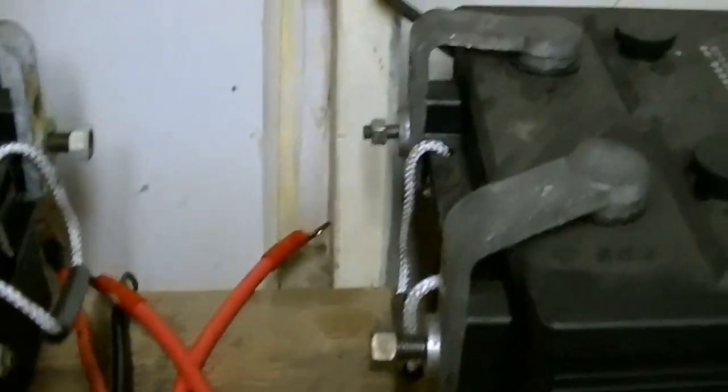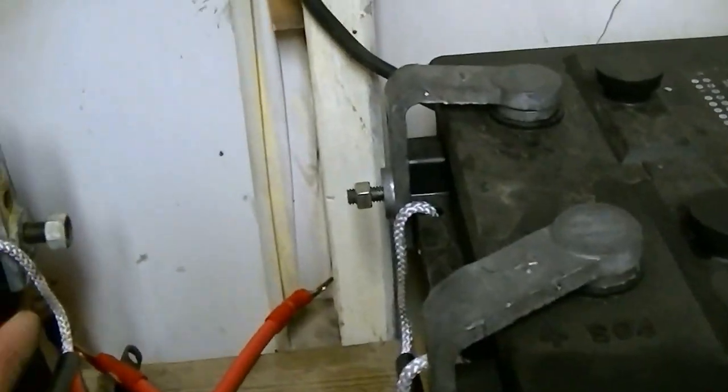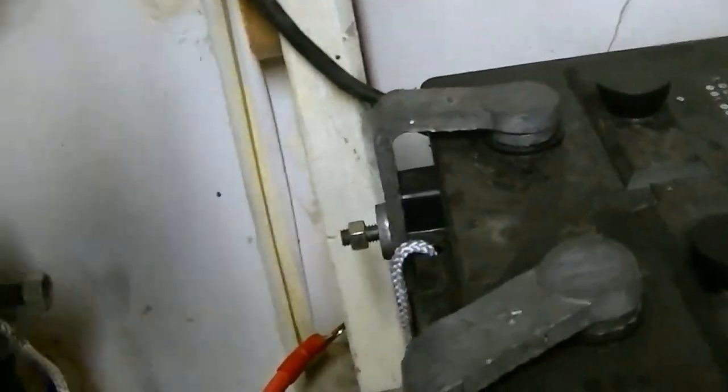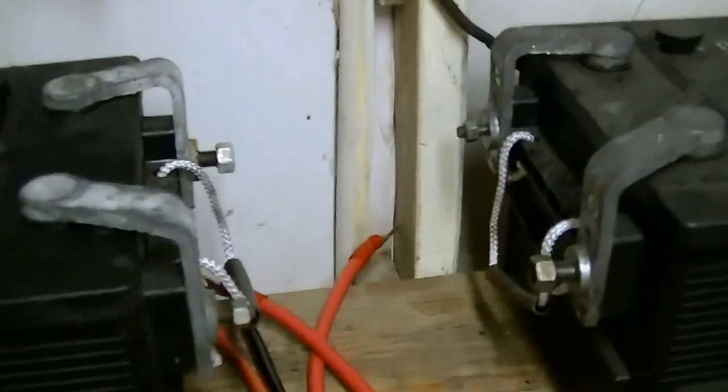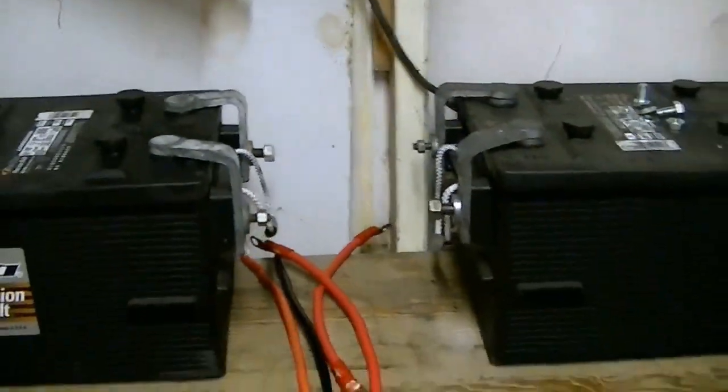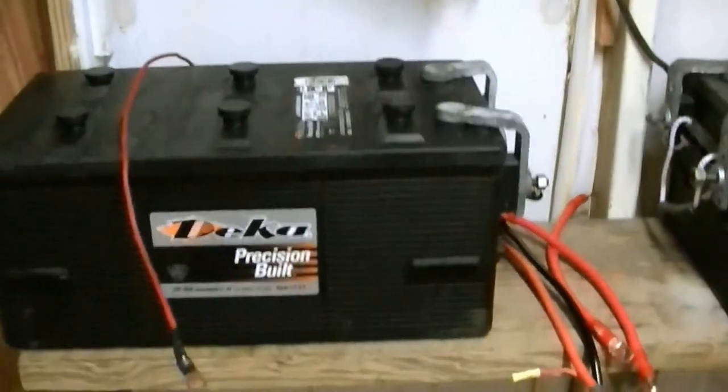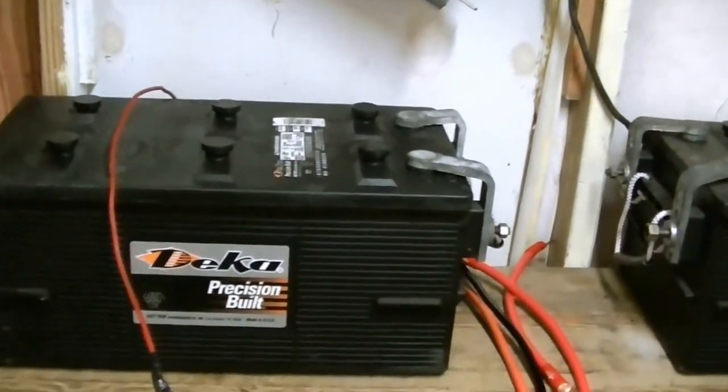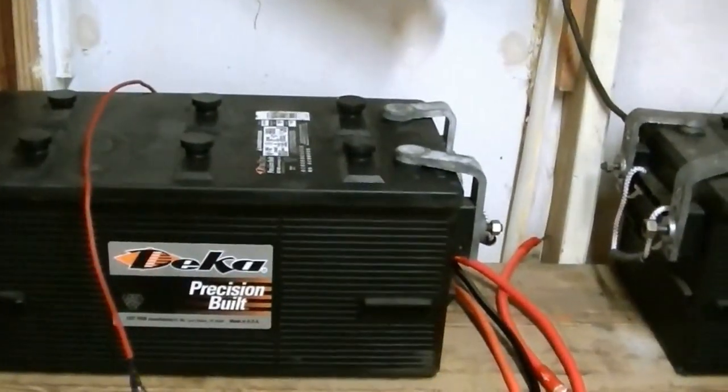If it was a 24-volt system, then you would go from positive to negative and then from positive up to the charge controller, and it's wired in series and makes it a 24-volt system. This is a simple 12-volt system. I'm just going to be running a drill press. I've got several drill presses and a saw.